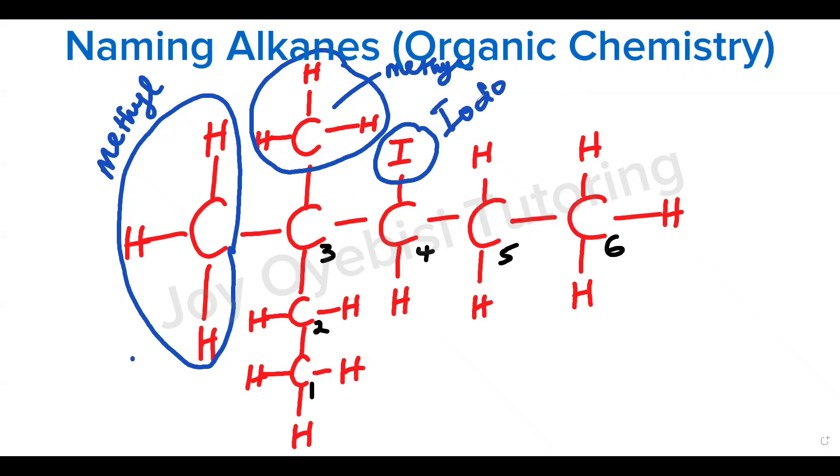Now we have all the names spelled out. The next thing would be to bring them all together. So we have two methyl groups and we have one iodo. Start with your substituents. Now when we have two different groups of substituents, we arrange them alphabetically. So in this case, iodine is going to come first. So we're going to start by saying four iodo for this iodine.